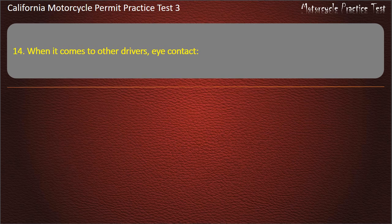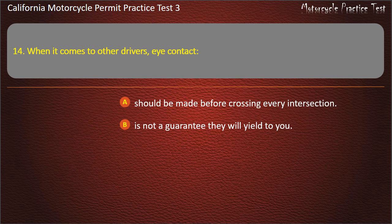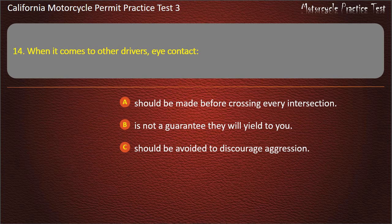Question 14. When it comes to other drivers, eye contact: should be made before crossing every intersection, is not a guarantee they will yield to you, should be avoided to discourage aggression, or ensures they will stop and let you through. Answer: Is not a guarantee they will yield to you.